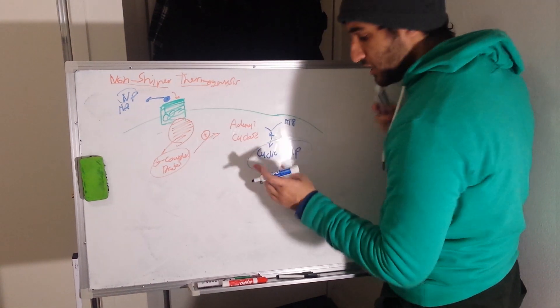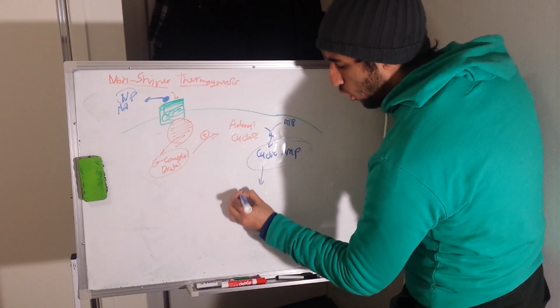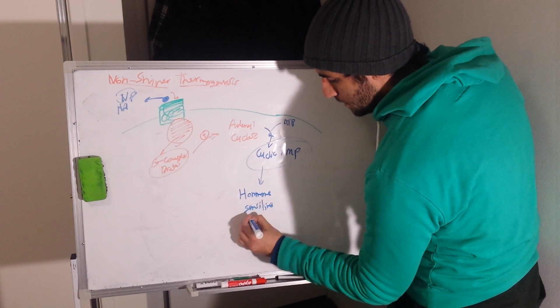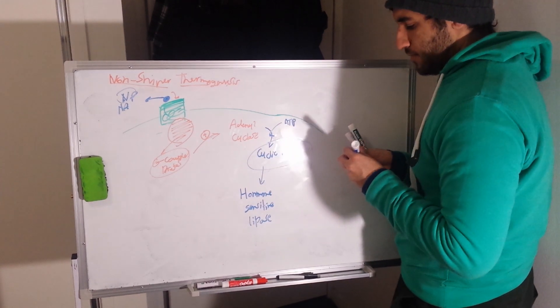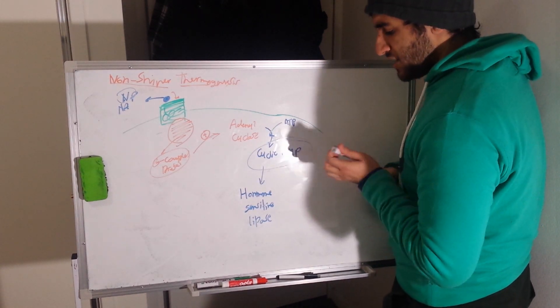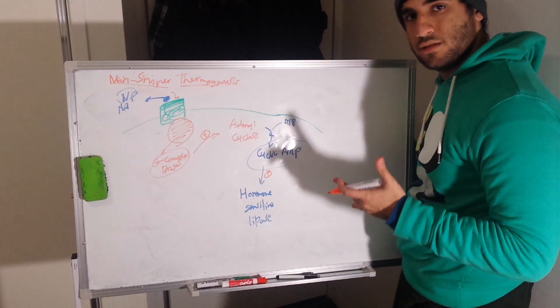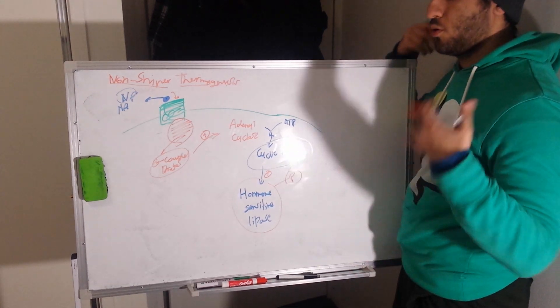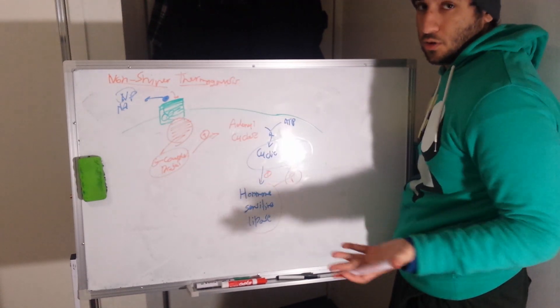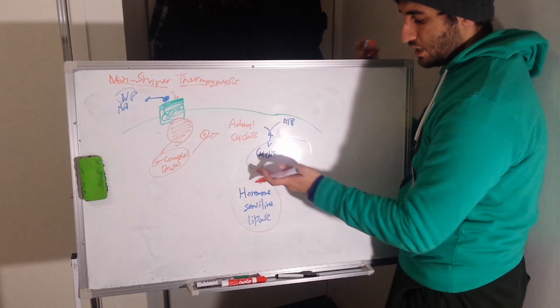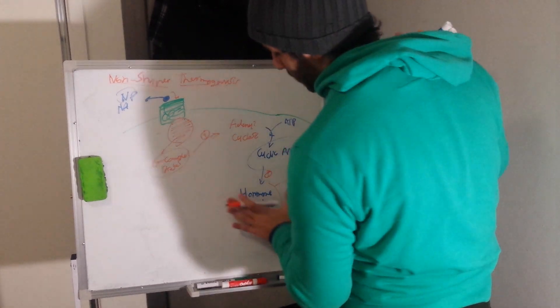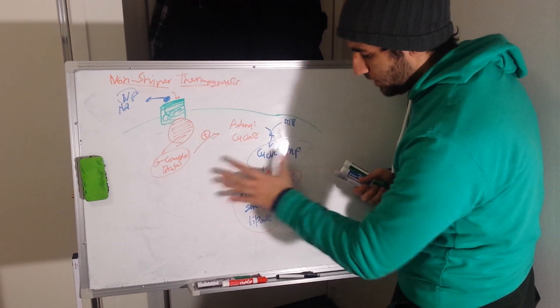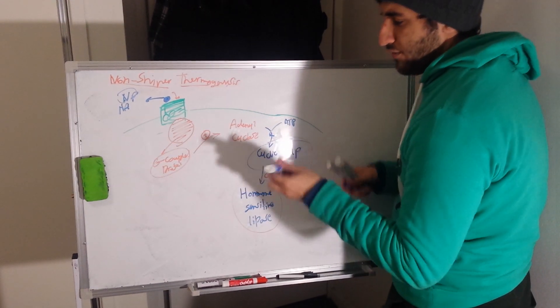The target protein in this case is hormone-sensitive lipase. So again, you're having this being activated, and this activation is really being done by phosphorylation upon an extremely cold environment. And of course, once the cold environment is gone, norepinephrine is gone, and we have the phosphatase dephosphorylating this and no longer activating this target protein. But we don't care about that issue here, we're talking about activation.